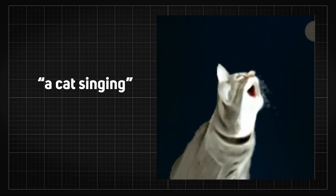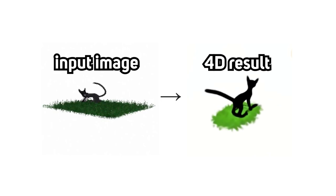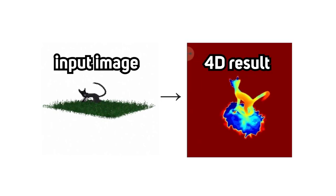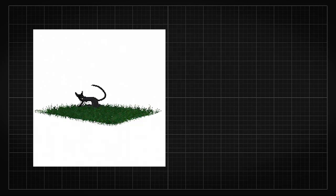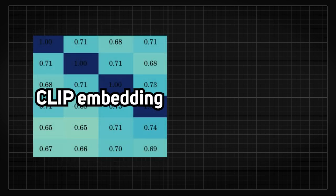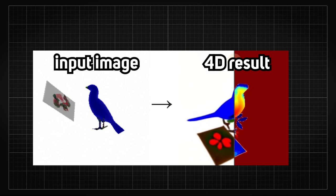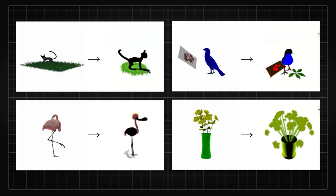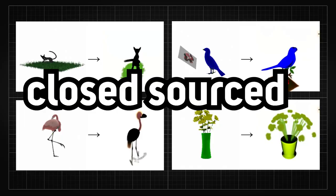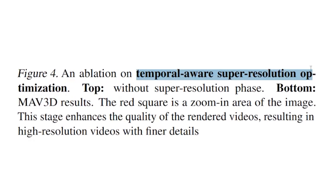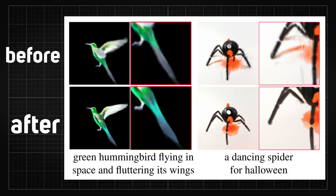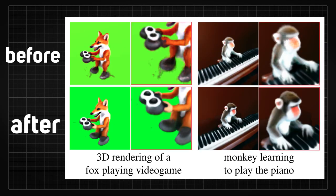This text-to-4D research also made image conditioning possible, where an image can be used as a reference to generate a 4D result. How they did this was by converting the image into CLIP embeddings to replace the text embeddings as input. How well it works is unknown since they only showed a few 4D results and their code is closed source. They also came up with a temporal super resolution optimizer, which is probably a 4D NeRF upscaler if I'm understanding it correctly. Kind of cool and it works pretty well — I would definitely love to see more NeRF upscaling research.